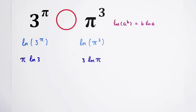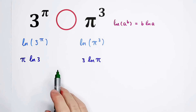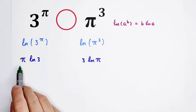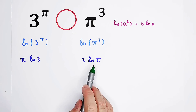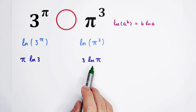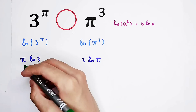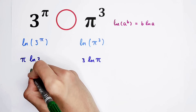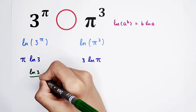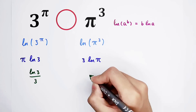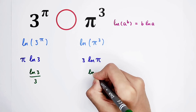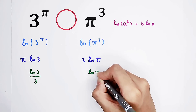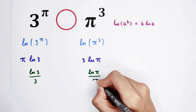Now look at their forms — look at the left-hand side and the right-hand side. Pi times the natural log of 3; 3 times the natural log of pi. If we divide both sides by 3pi, we end up with the natural log of 3 over 3 on the left, and the natural log of pi over pi on the right.